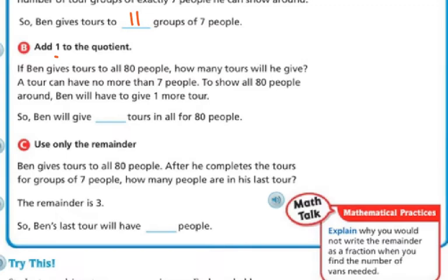So if Ben gives tours to all 80 people, how many tours will he be given? A tour can have no more than seven people. So to show all 80 people, Ben will have to give one more tour. So that means instead of giving 11 tours, he's going to give 12. In 11 of those tours, there's going to be seven people. But in that last one, there's going to be those three remainders, right?